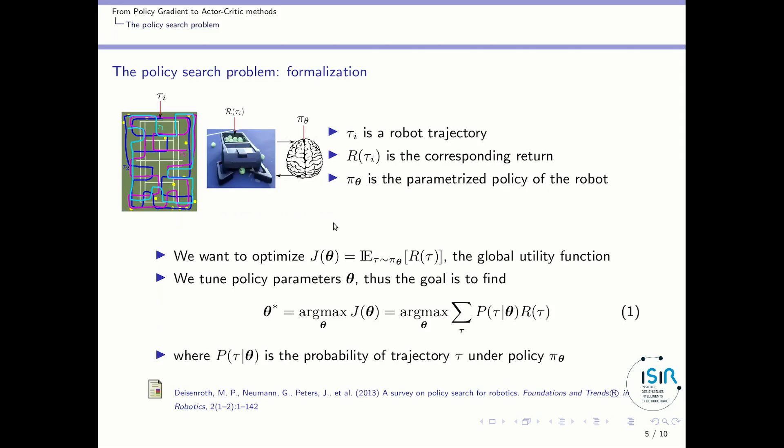Now we have all the elements to formalize the policy search problem. First we will consider a set of trajectories that we will note τ_i. Second we will consider the return of these trajectories. We will note it R(τ_i) and in our problem this is the number of balls collected by the robot over trajectories. Third we will consider a robot controller P_θ that's a parameterized controller where θ is the set of parameters.